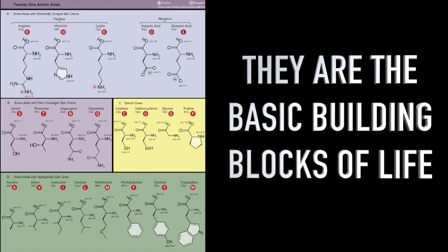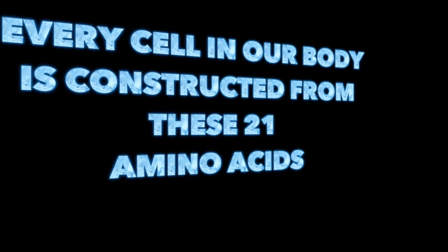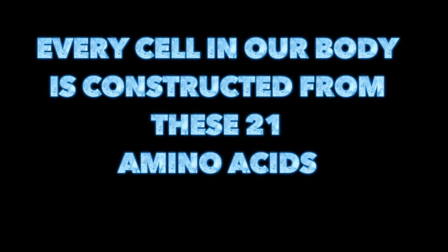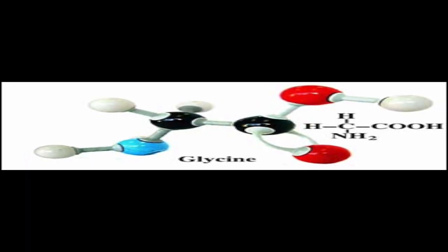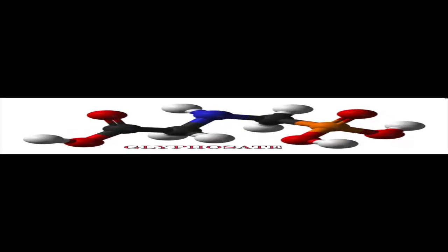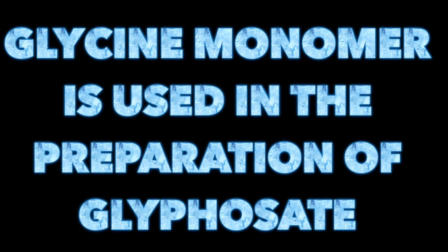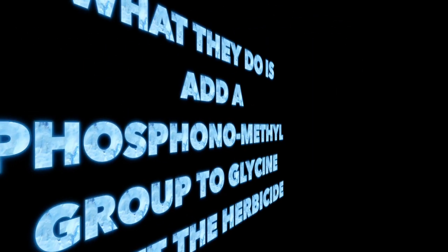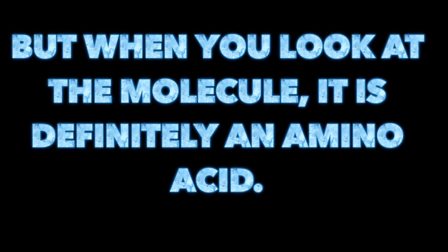By the way, we have 20 or 21 amino acids that are peculiar to our biology, and they are the basic building blocks of life. Every protein is constructed from amino acids. Every cell in our body is constructed from these 21 amino acids, and the simplest amino acid in our biology is glycine. When you look at glyphosate and compare it to glycine, glyphosate is a glycine. The glycine monomer is used in the preparation of N-phosphonomethylglycine — they add a phosphonomethyl group to glycine, and that's how they get the herbicide. When you look at the molecule, it is definitely an amino acid.